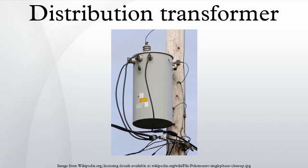Pole-mounted transformers often include accessories such as surge arresters or protective fuse links. A self-protected transformer includes an internal fuse and surge arrestor, while other transformers have these components mounted separately outside the tank. Pole-mounted transformers may have lugs allowing direct mounting to a pole, or may be mounted on cross-arms bolted to the pole. Aerial transformers larger than around 75 kVA may be mounted on a platform supported by two poles. A three-phase service may use three identical transformers, one per phase. Transformers designed for below-grade installation can be designed for periodic submersion in water.